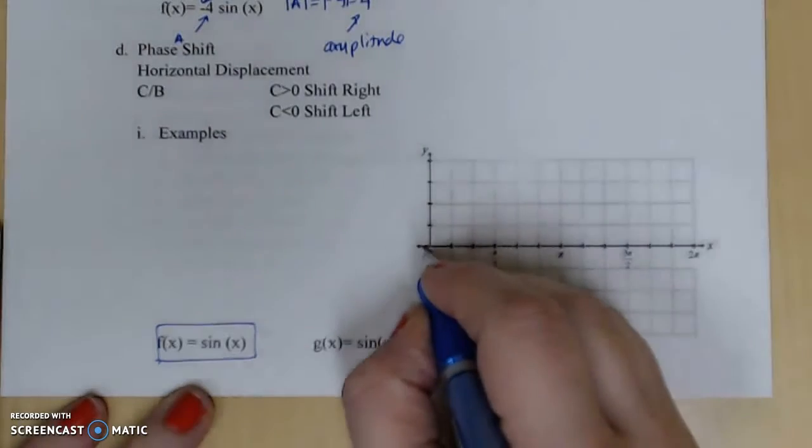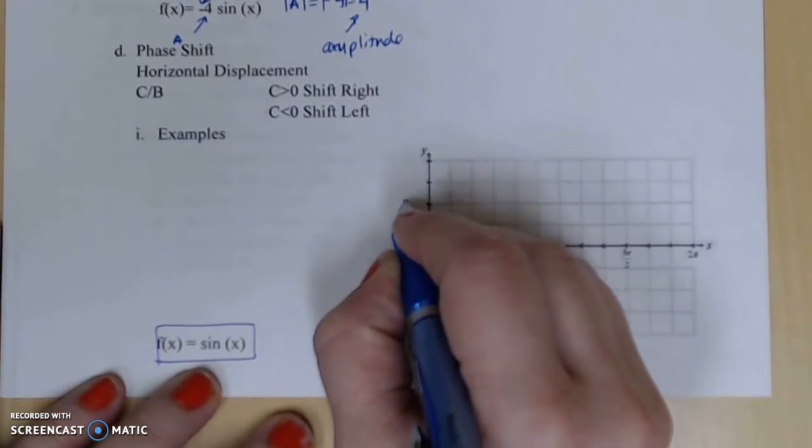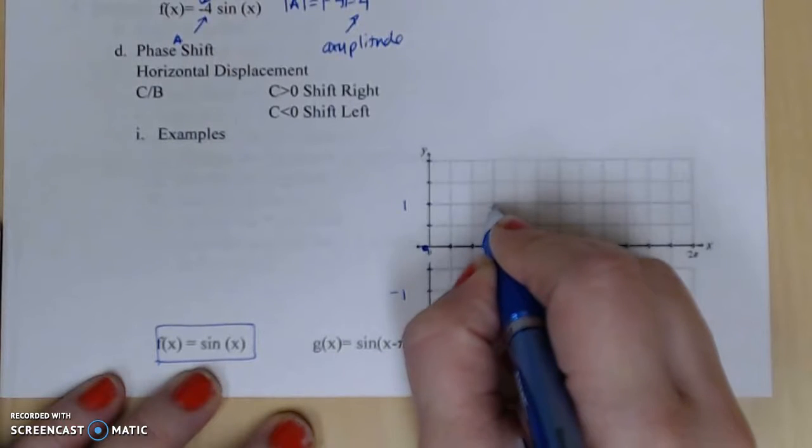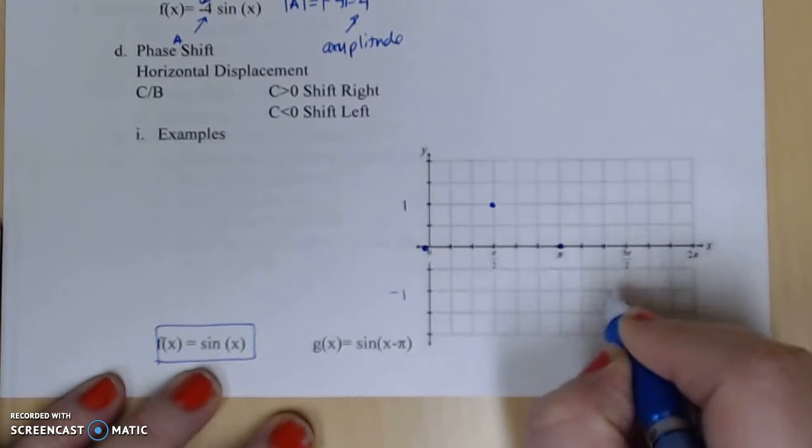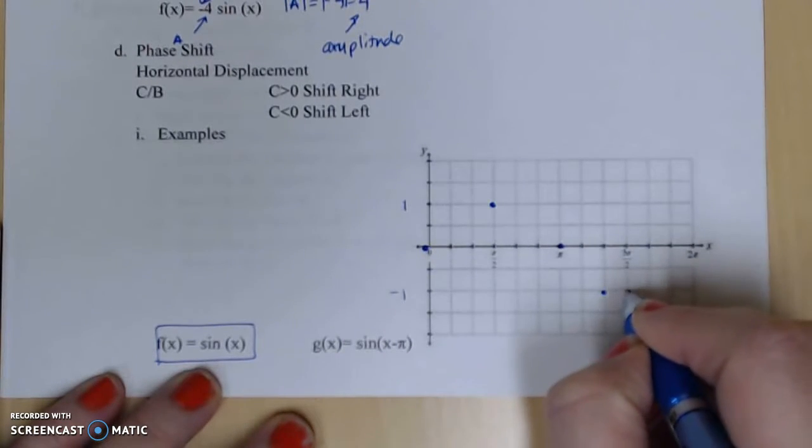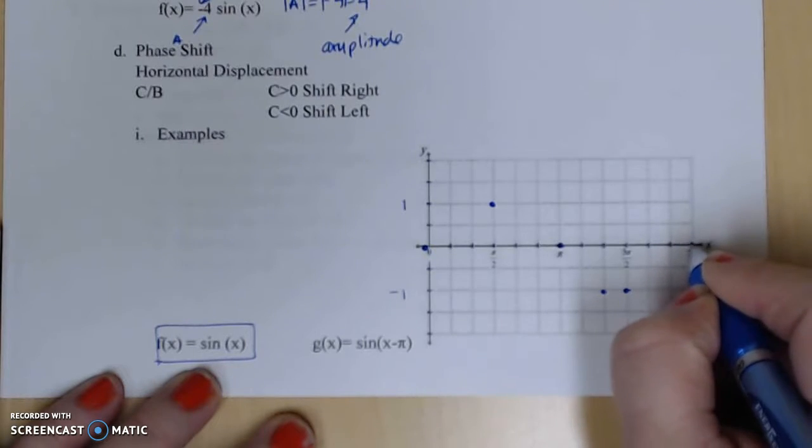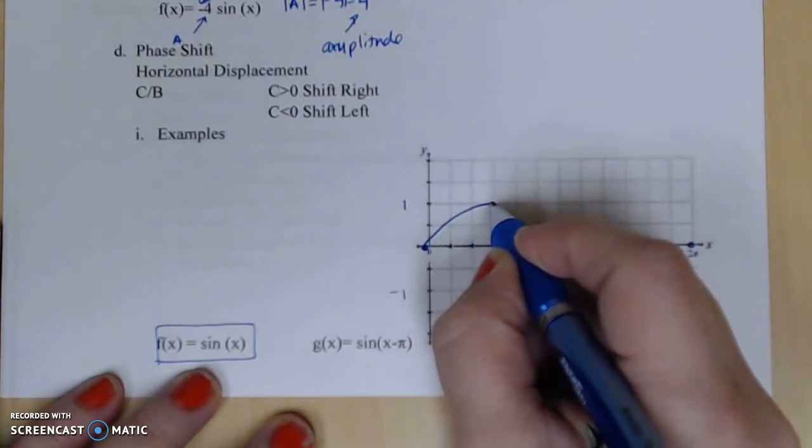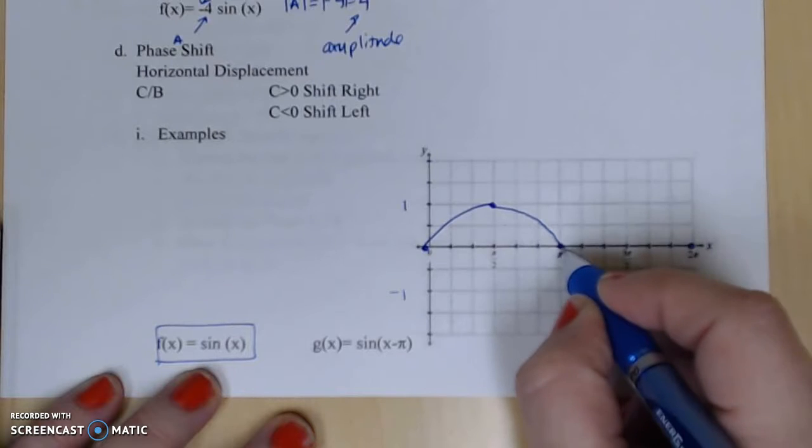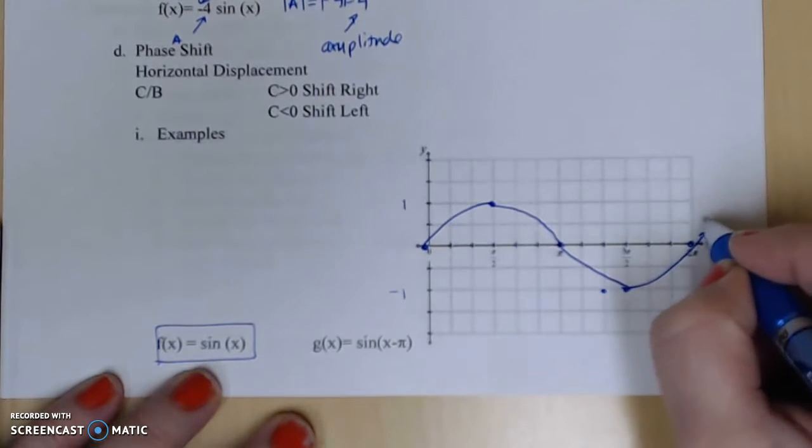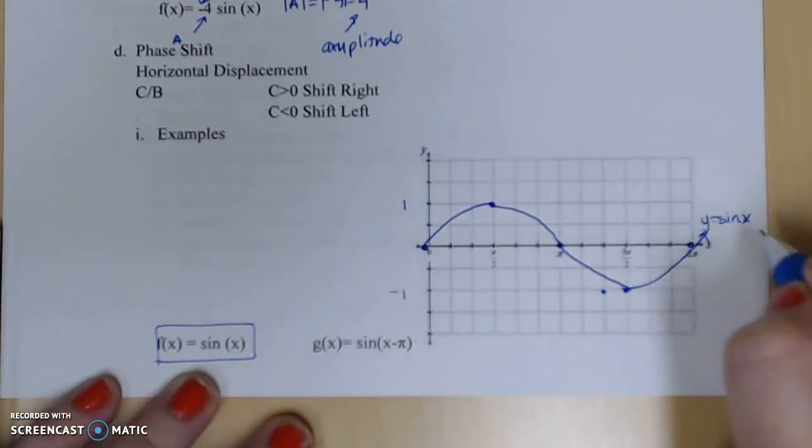Our sine graph starts at zero. We'll call this 1 and negative 1. And so it goes up, comes down – oh, a little too far over.